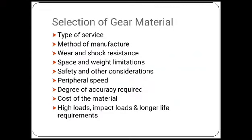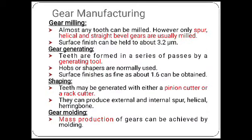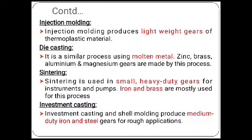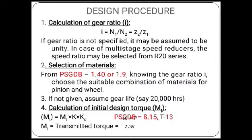Further selection criteria include peripheral speed, degree of accuracy required, cost of material, high load and impact load requirements, and longer life requirements. There are different types of gear manufacturing methods: gear milling, gear generation, shaping, molding, die casting, and sintering, among many others.